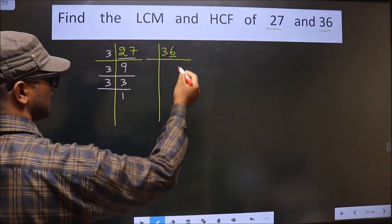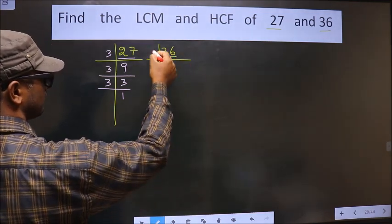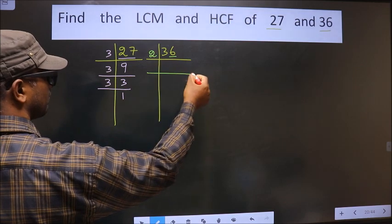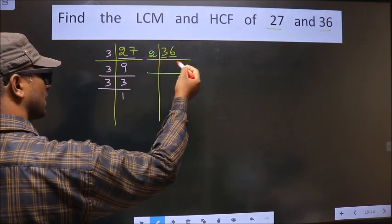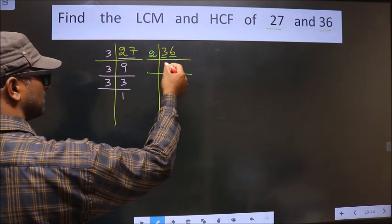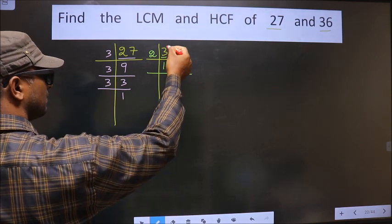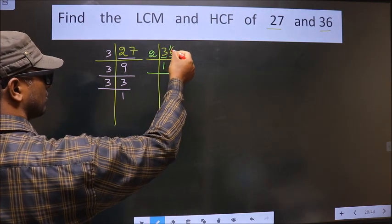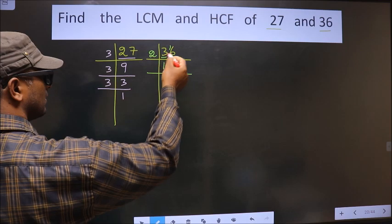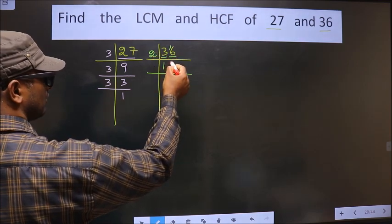Now for this number, last digit is 6, even, so we take 2 here. First number is 3. A number close to 3 in 2 table is 2 once 2. 3 minus 2 is 1, 1 carried forward making it 16. When do we get 16 in 2 table? 2, 8, 16.